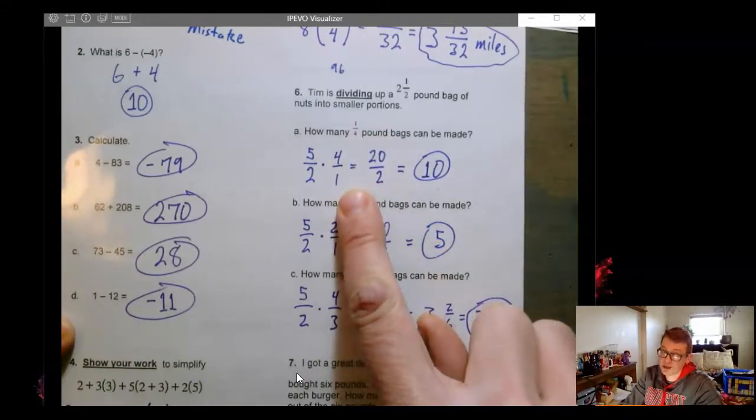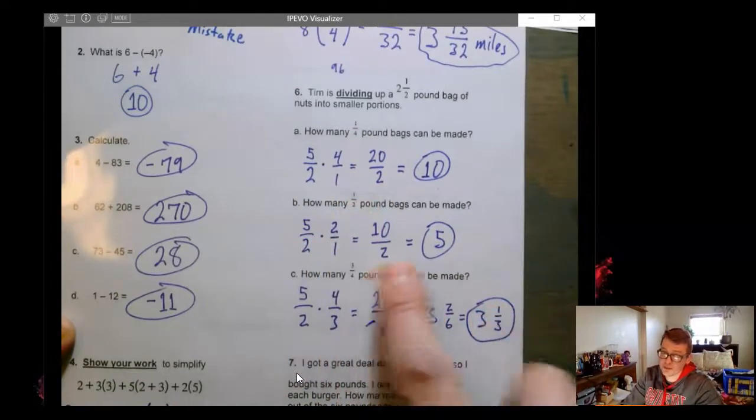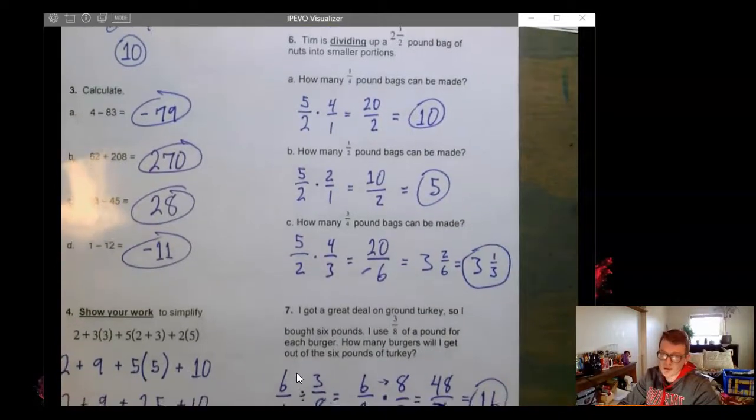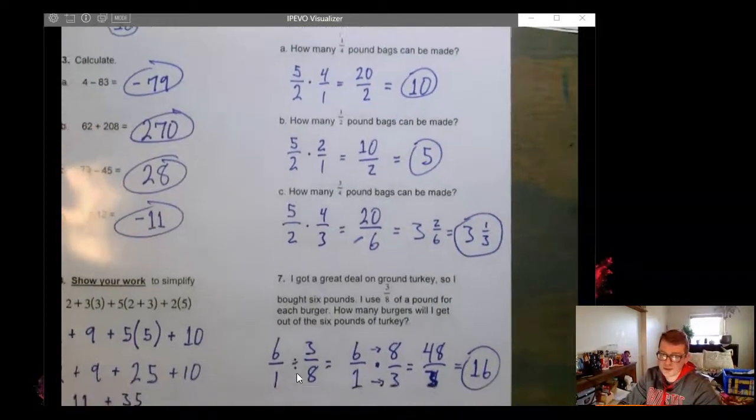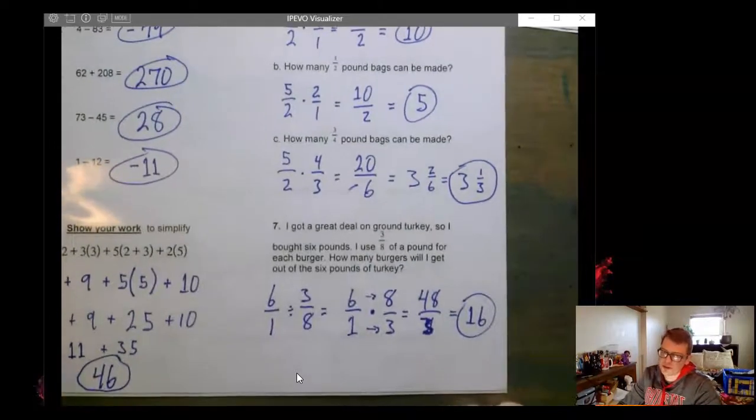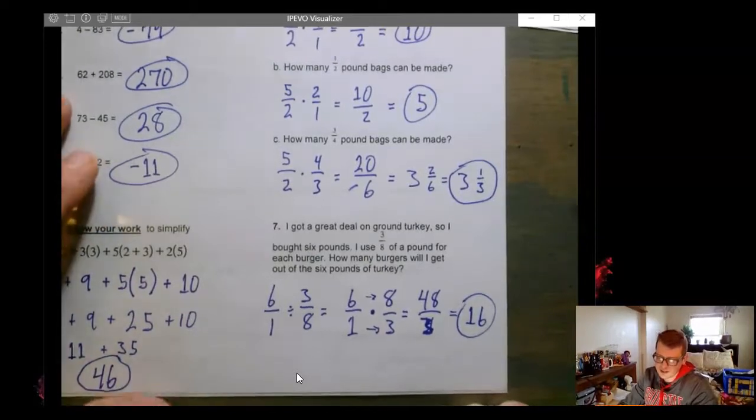So of course, I'm skipping some steps here. I did not write down all the work because you should come to Math Lab or AO or Extensions if you want to actually go over these problems with me. I just wanted to make sure you guys could see what the right answers were. This is something I would do if it was a great deal. I would buy a lot of ground turkey and then even freeze it if I need to.